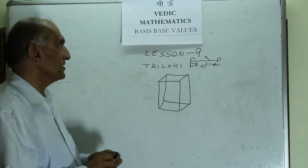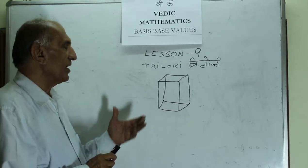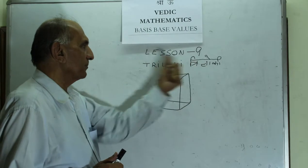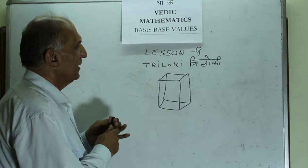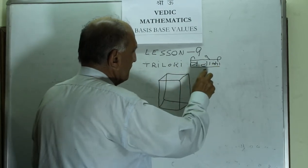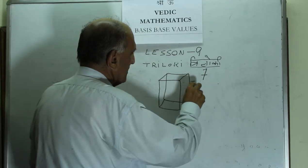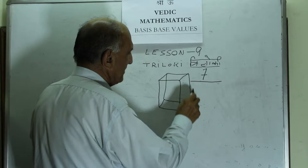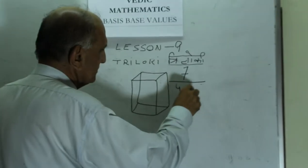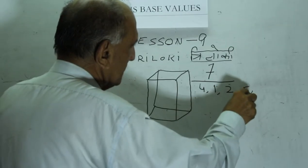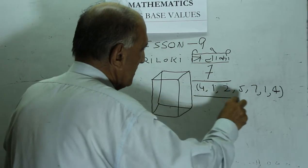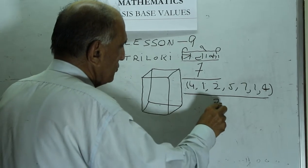Welcome to Vedic Mathematics' Basis-Based Values. We are approaching Terloki. Terloki is a formulation — a formulation of seven letters. These seven letters accept a values range, and this values range is of summation value 24.